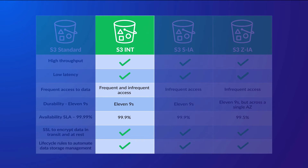Much like S3 Standard, S3 Intelligent Tiering also offers 11 nines of durability across multiple availability zones, offering protection against the loss of a single AZ. However, its availability SLA is set at 99.9%, not quite as high as S3 Standard. This storage class also has the added support of SSL for encrypting data in transit, in addition to encryption options for data at rest. S3 Intelligent Tiering also supports lifecycle rules and matches the same performance throughput and low latency as S3 Standard.